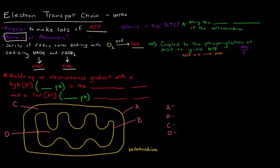Now, where is the electron transport chain? It's somewhere in the mitochondria, but specifically it's along the inner membrane.